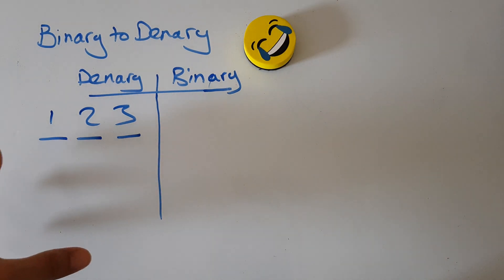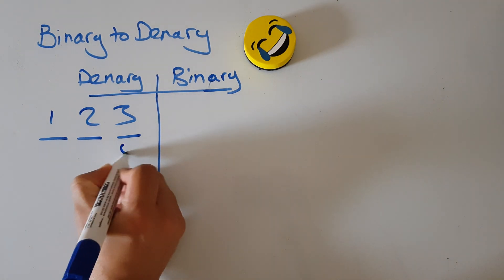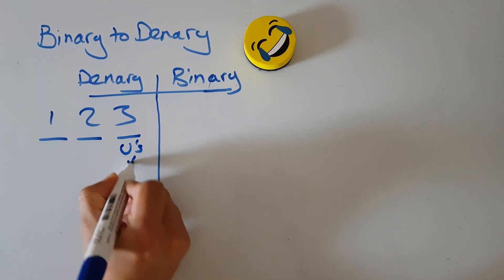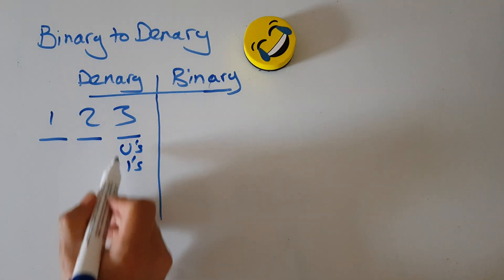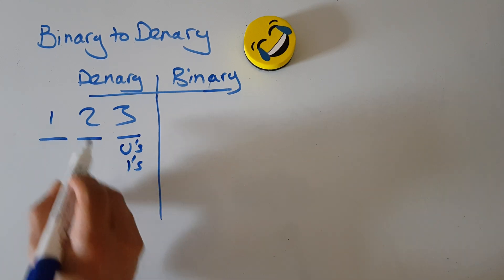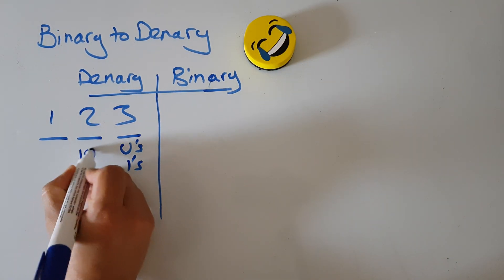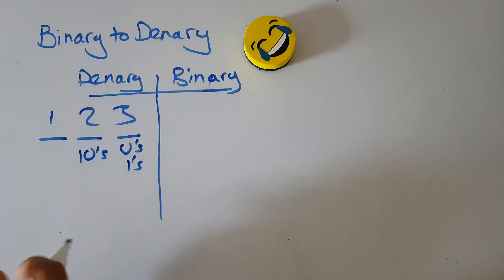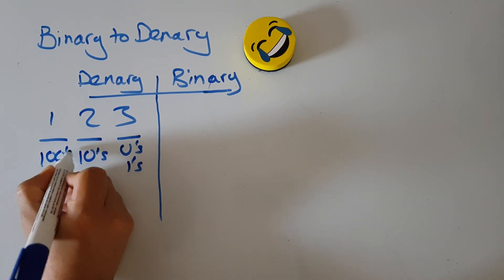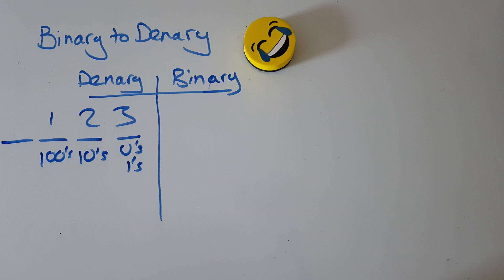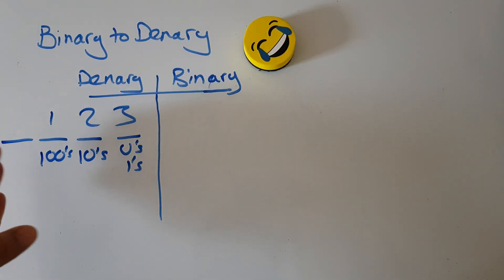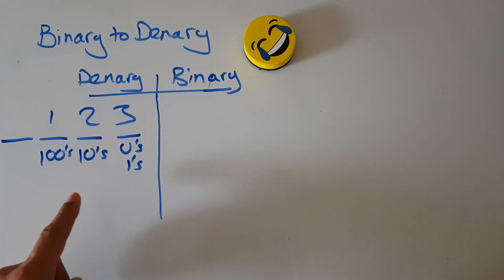Then they introduce the system of place values. They'll label the first column the units or the ones, then the next one tens, then the next one hundreds. You can see we're just adding zeros, and the next one will be thousands. So we have a very simple system using place values.